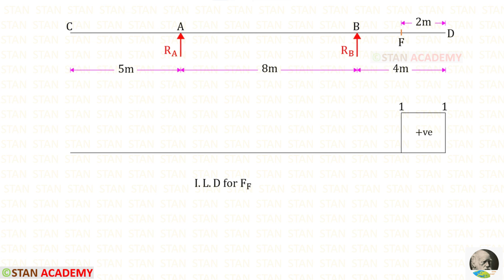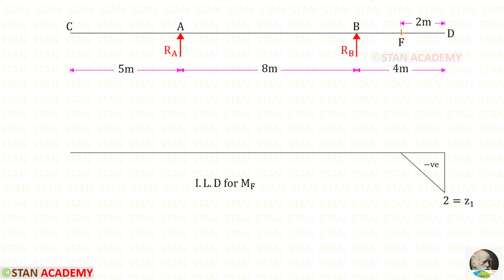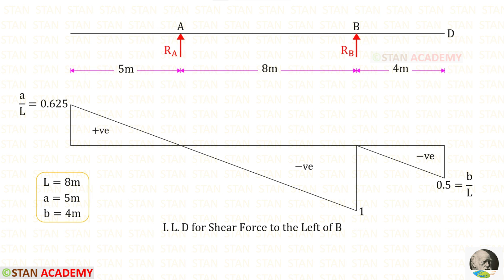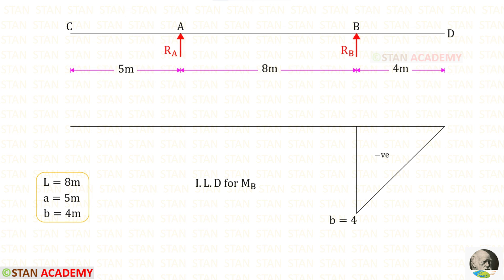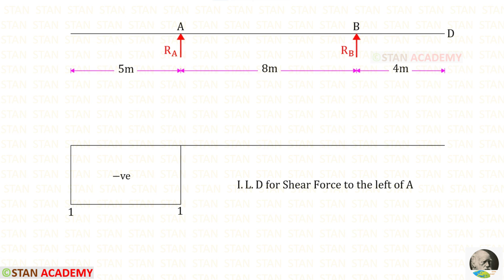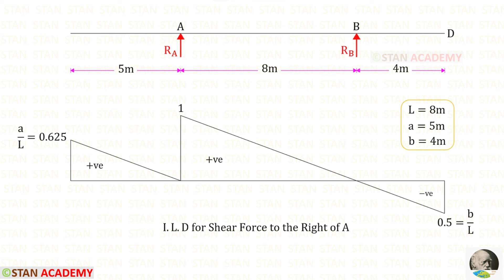This is the ILD for the shear force at point F. This is the ILD for the shear force to the right of B, and this is the ILD for the shear force to the left of B. This is the ILD for MB. This is the ILD for MA. This is the ILD for the shear force to the left of A, and this is the ILD for the shear force to the right of A. Thank you for watching this video.